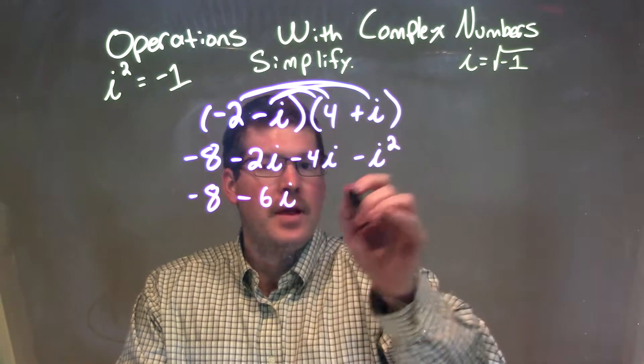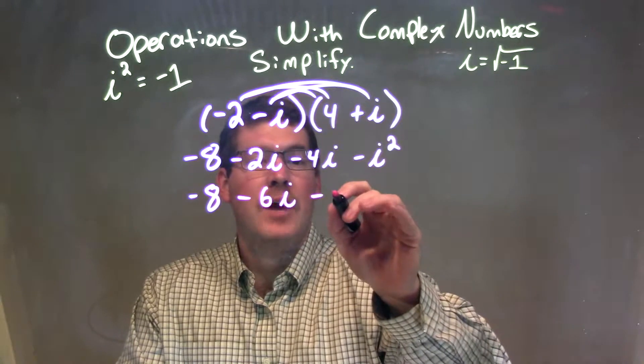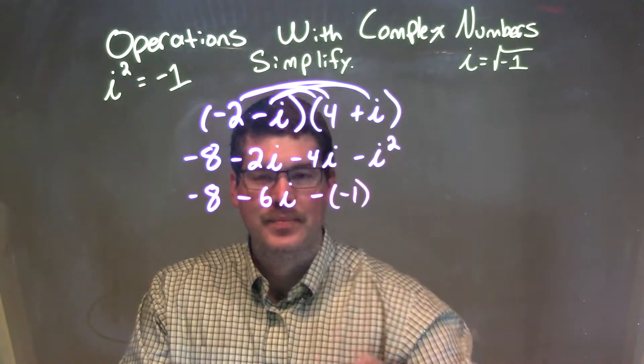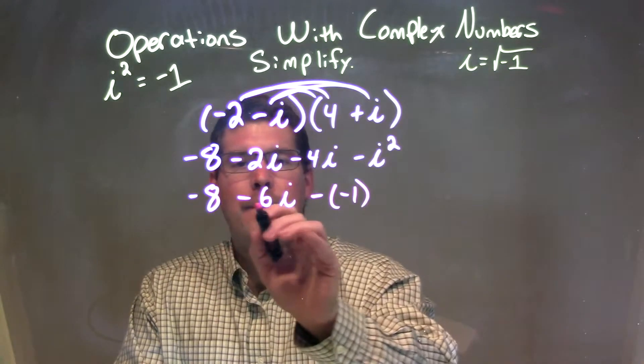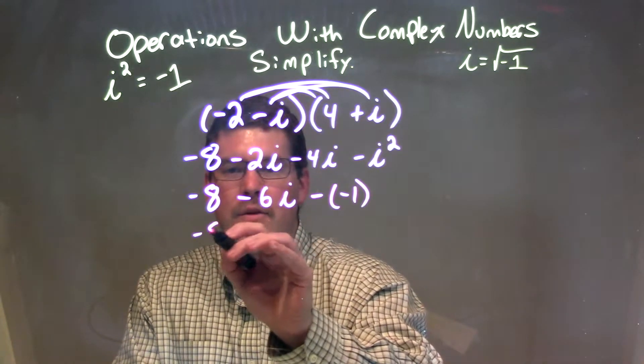And then here's the kicker. We have minus i squared, and i squared we know is negative 1. So now we have minus a negative 1. Interesting. So now we have negative 8 minus 6i minus a negative 1, which is like plus a positive. So I'll show you that.